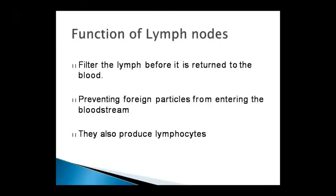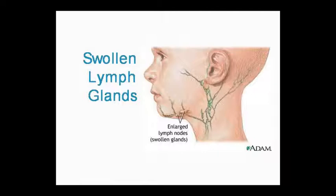The function of lymph nodes is to filter lymph before it goes into the blood. Because lymph has leaked from blood into tissue and goes back to blood, it is filtered through the lymph nodes first. Lymph nodes also filter out foreign particles from the bloodstream. Additionally, lymph nodes produce lymphocytes — both B lymphocytes and T lymphocytes.